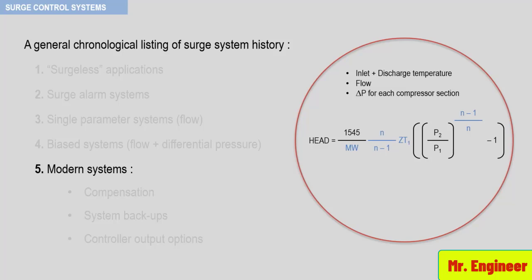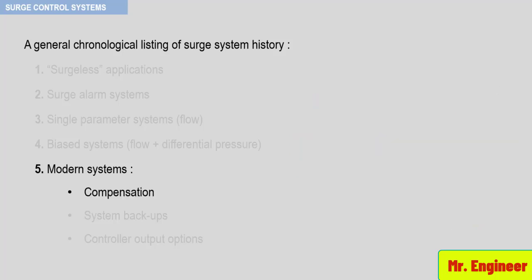The other available options include compensation for gas composition changes, system backups that will protect the compressor in the event of a surge, and controller output options to enable the surge system to be soft in relation to the process system. In other words, operation of the surge control system will not adversely affect the process system.